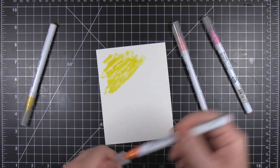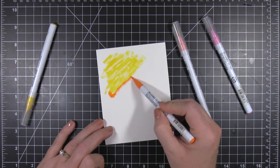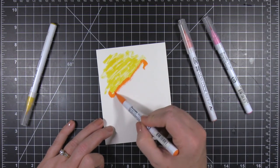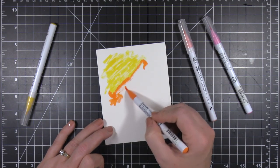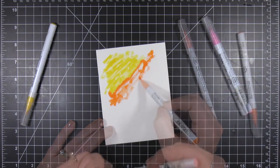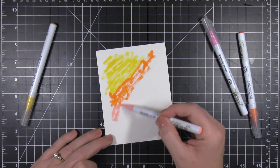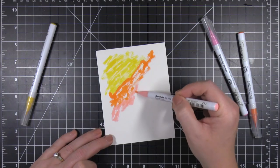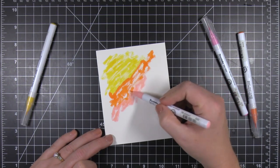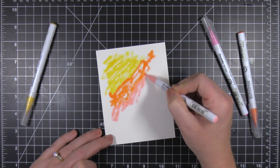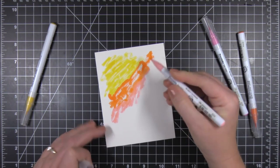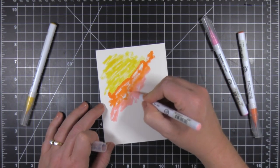To do that, I am just using my Zig Clean Color Real Brush markers. Now over in the classroom, I linked to a blog post that Julie did using these same ones where she created a really nice soft floral stamped image, so you may want to check that out. But I started out with the yellow, and then I used the orange, and then I'm also using this flamingo pink.